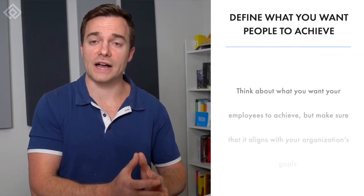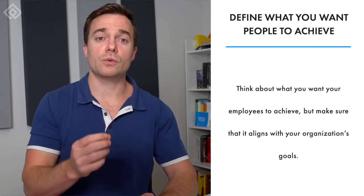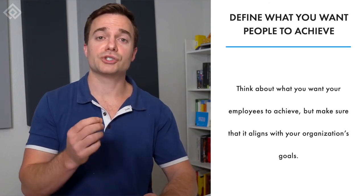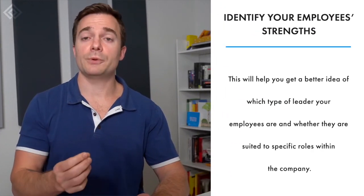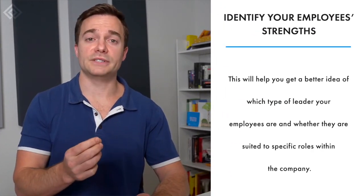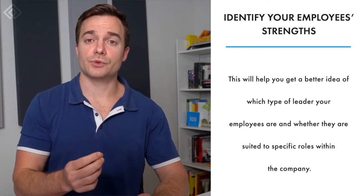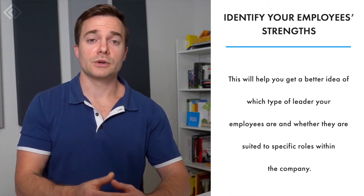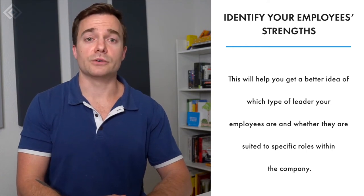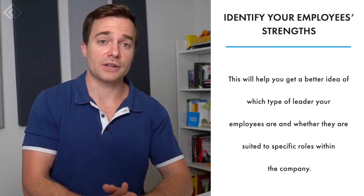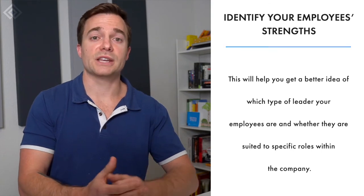Second, define what you want people to achieve. Once you have defined your organization's cultural values, think about what you want your employees to achieve, but make sure that it aligns with your organization's goals. Third, identify your employees' strengths. This will help you get a better idea of which type of leader your employees are and whether they are suited to specific roles. You may find these out through personality tests such as the Myers-Briggs indicator or DISC.